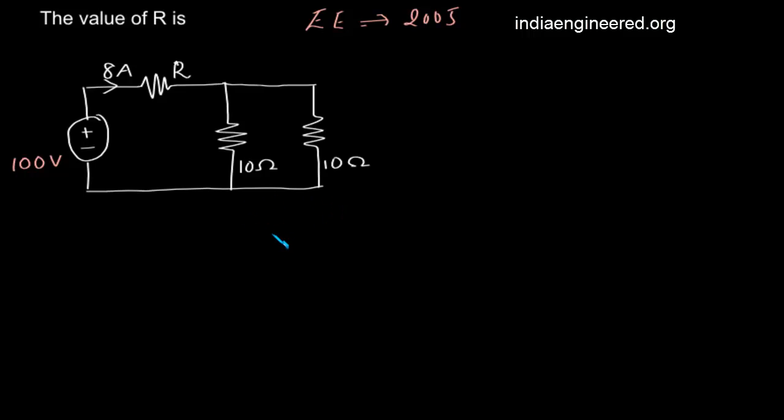Which will give an equivalent resistance of 5 ohms. That is, R equivalent is 10 times 10 divided by 10 plus 10, using the formula R1 R2 divided by R1 plus R2. That is 5 ohm. Now we can redraw the circuit.